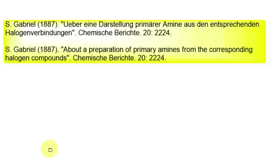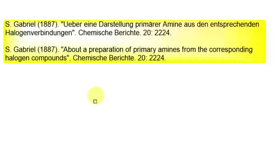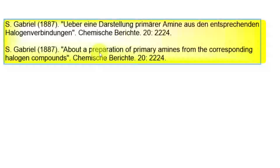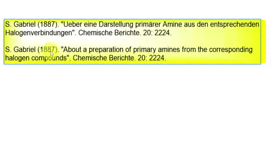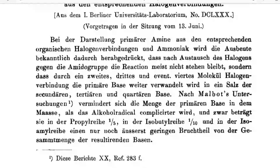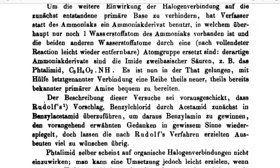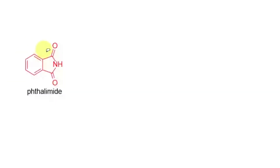Gabriel published this in 1887 in a German journal. Sigmund Gabriel is a German chemist. The rough translation of the title is about a preparation of primary amines from the corresponding halogen compounds. Let us have a quick look at the paper, published by Gabriel in German.